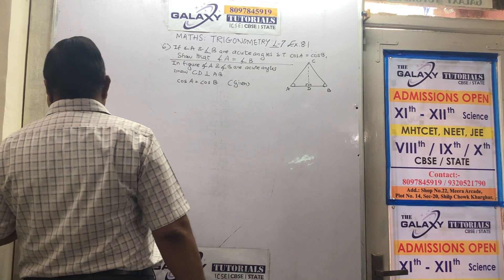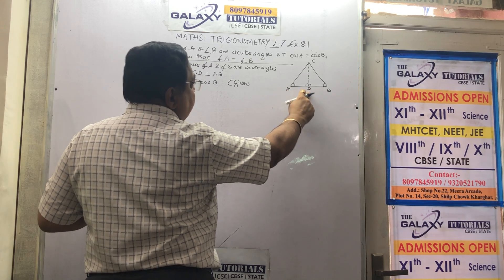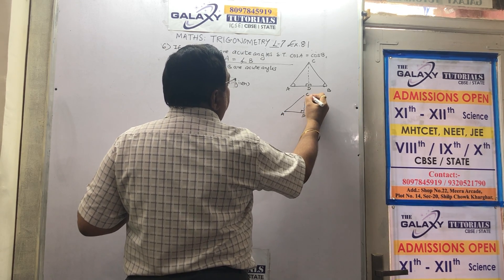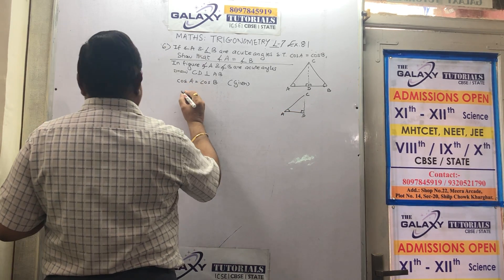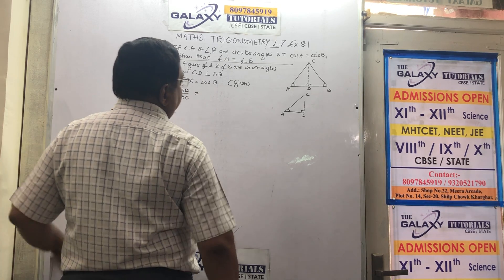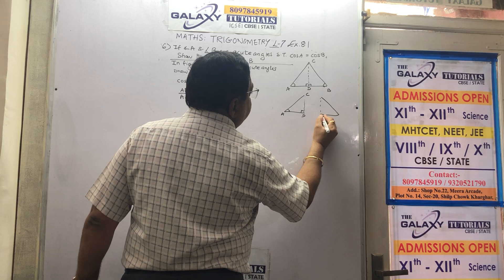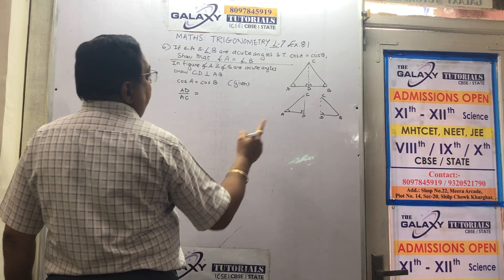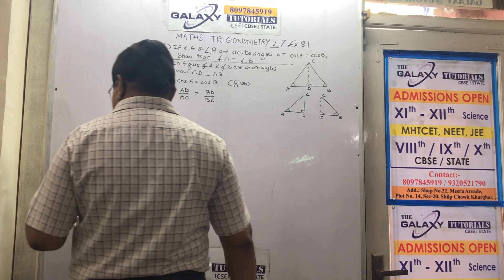Cos is adjacent side upon hypotenuse. Look at one triangle at a time; separate the triangles in your mind. Cos of A in our diagram is AD upon hypotenuse AC — adjacent side upon hypotenuse. For the other triangle BDC, cos of B is BD upon hypotenuse BC — adjacent side upon hypotenuse. I hope you can see and are satisfied.